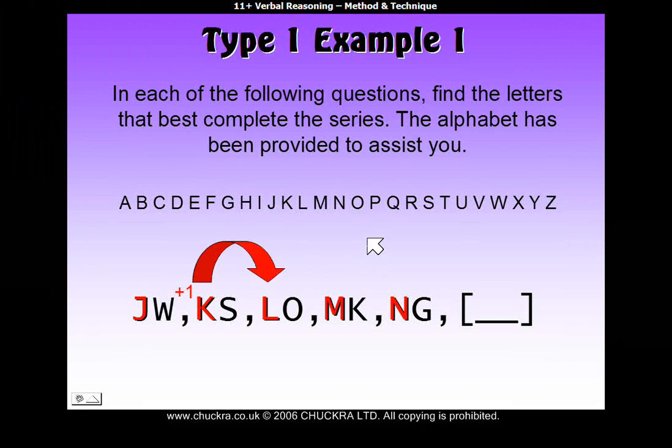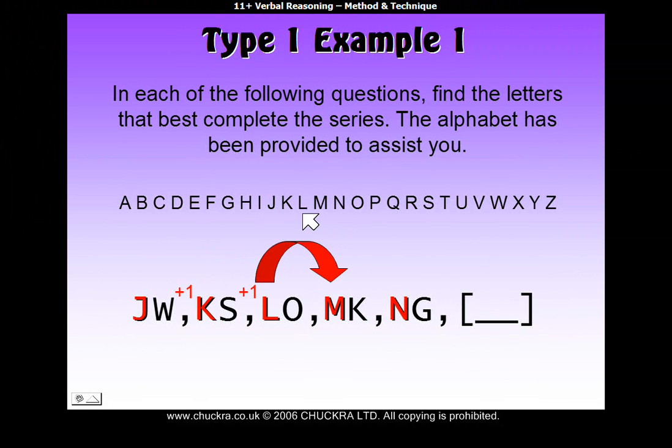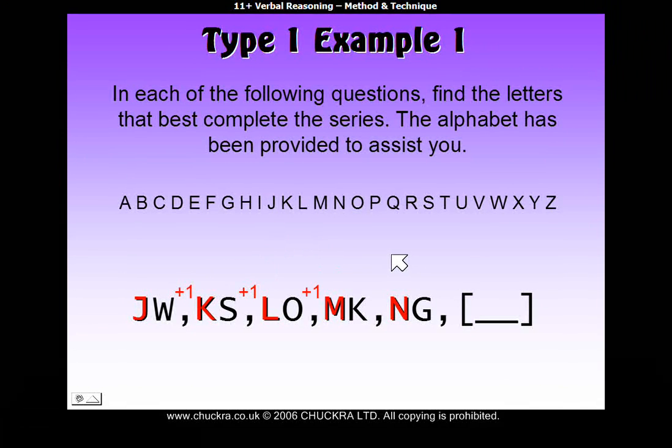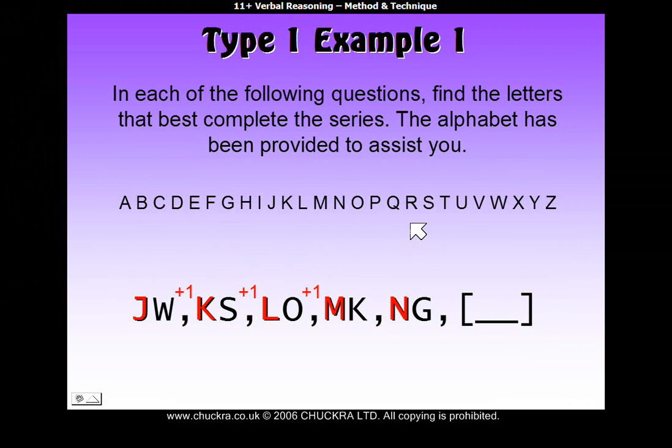How do we get from K to L? K to L, also up one letter in the alphabet. L to M, up one letter again, and M to N, also up one letter.